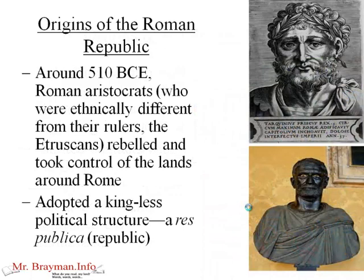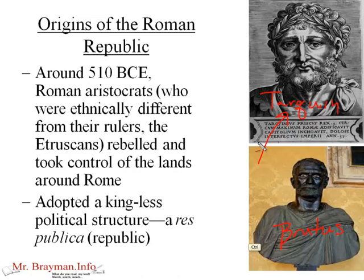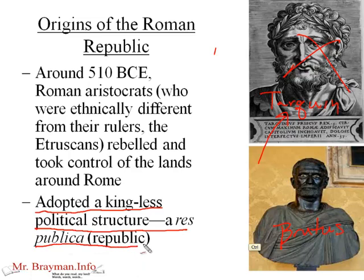Around 510 BCE, Roman aristocrats who were ethnically different from the Etruscans rebelled and took control of the lands around Rome. This is Junius Brutus, one of the leaders of the revolt against the Tarquin — the last great Etruscan king who ruled over the Romans. These Roman aristocrats revolted, took over, the Etruscans were gone, and they set up a kingless political structure. They said, 'We've been ruled by a king. We didn't like that. We want a res publica — a republic — a democracy made up of equals, or at least people with land and money.'